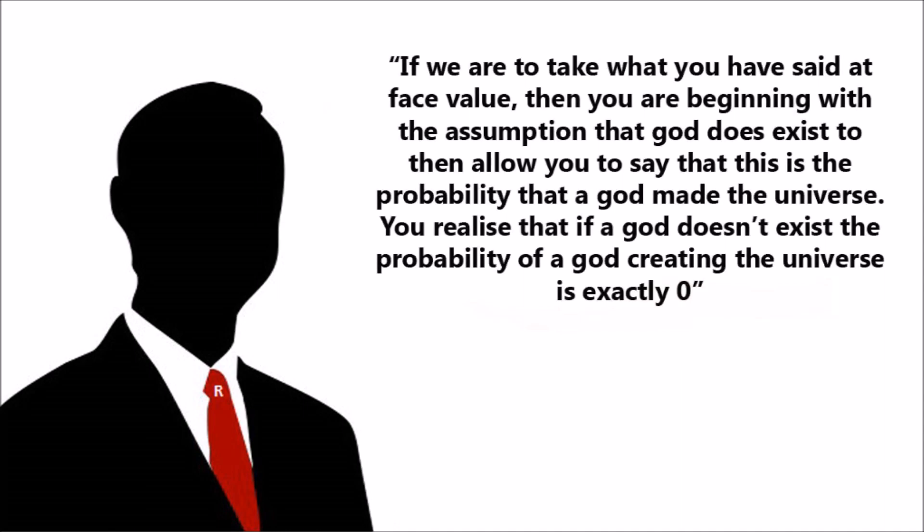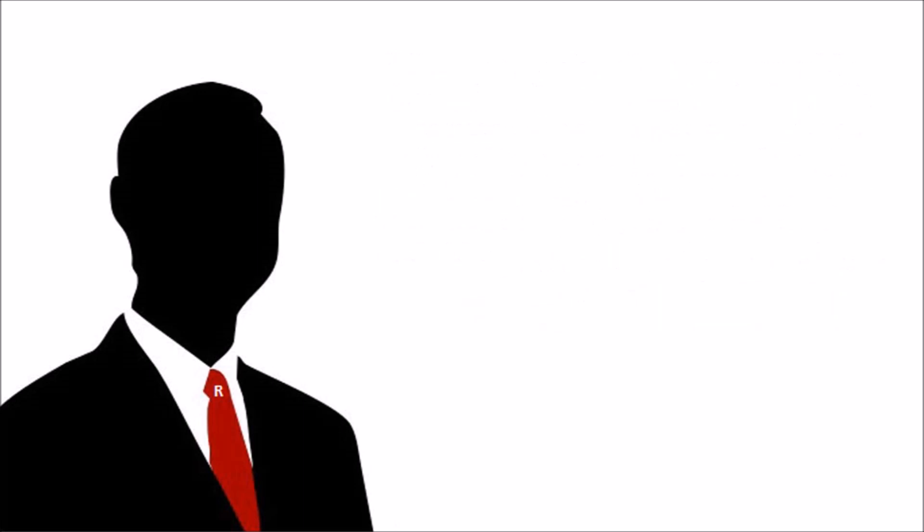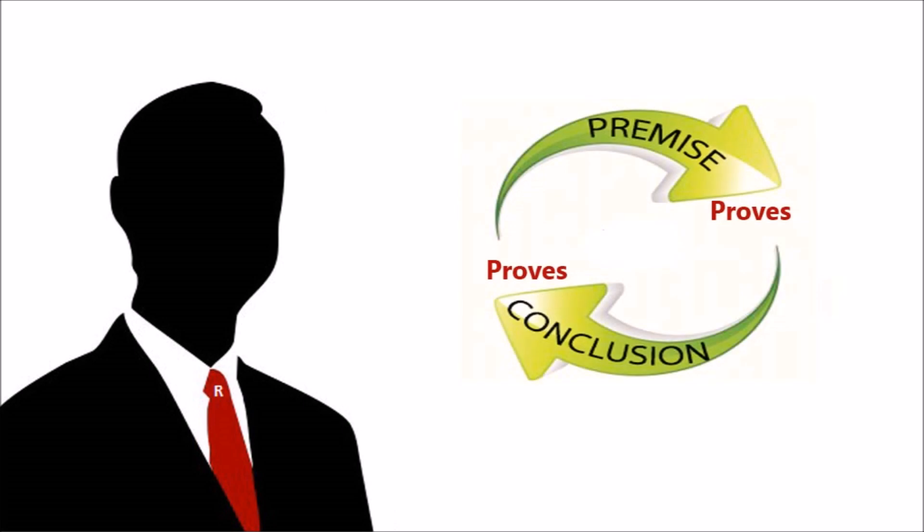Number two, if we are to take what you have said at face value, then you are beginning with the assumption that god does exist to then allow you to say that this is the probability that a god made the universe. You realize that if a god doesn't exist, the probability of a god creating the universe is exactly zero. For us to take the possibility of a god into account, a god must exist. To assume it and then work backwards is just circular reasoning.